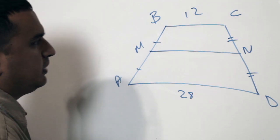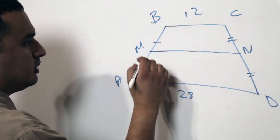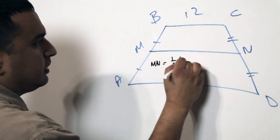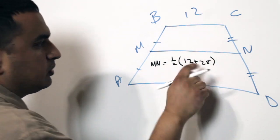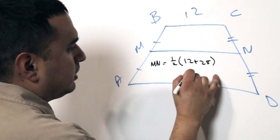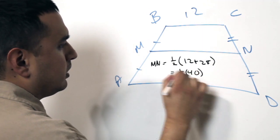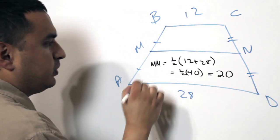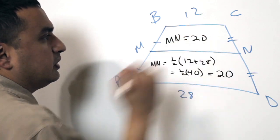Let's say that I wanted to find the length of M and N here. So what I would have to do is I would have to take M and N is going to be equal to one-half of 12 plus 28. Okay, well 12 and 28 is going to give me 40. And I want half of 40, which is going to be 20. So I know the length of M and N is going to be 20 units.